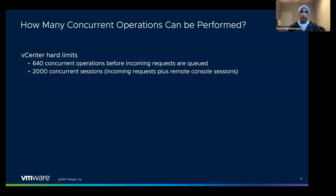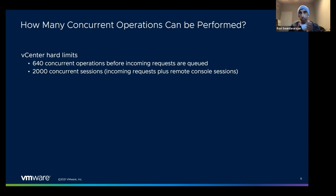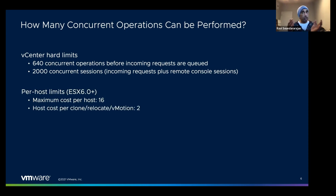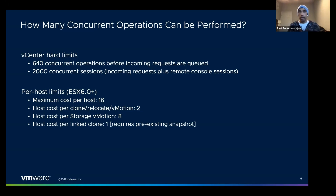When people talk about vCenter scalability they often think about these global limits and wonder why they seem more limited than 600 operations at a time. What I often tell people is that's only part of the equation. Perhaps the most important part is that there are per-host, per-datastore, and per-NIC limits. These ensure a host isn't spending all its time doing clones or migrations, but is still able to run VMs. Think of a host as having a capacity of 16, and most operations having a cost of two.